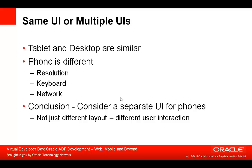Phones, however, are totally different. It's not just a matter of resolution — the keyboard is usually overlaying the page. There's also the issue of network. While many tablet users are using Wi-Fi connections, most phone users tend to use mobile network connections, which are slower and limit the amount of network traffic you can send and receive from your application. Because of these critical differences between phones and desktops, the conclusion is that you probably need to consider development of a separate user interface if you are targeting a phone.